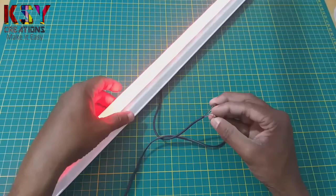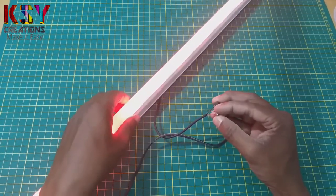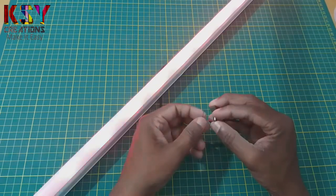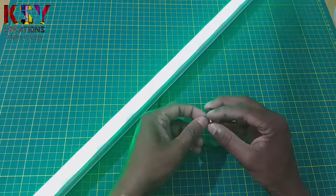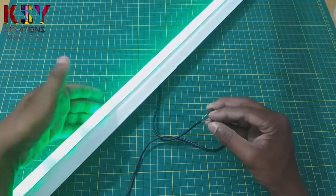You can see now, you can see red is glowing in this light. Now I will connect another wire. You can see this is the green light.